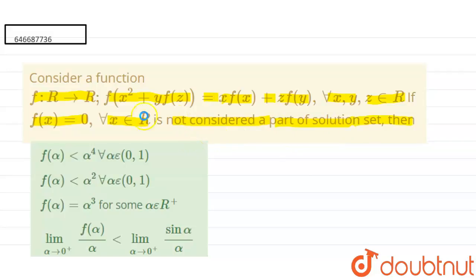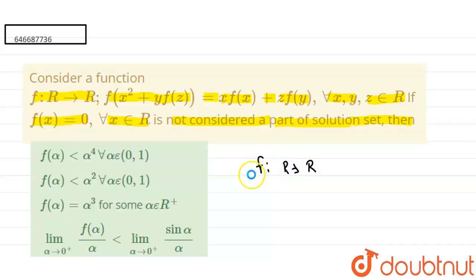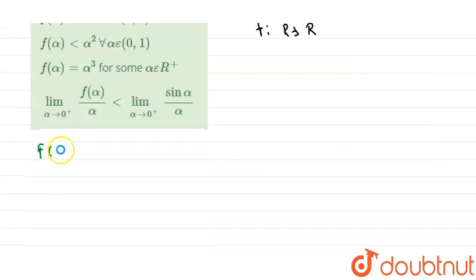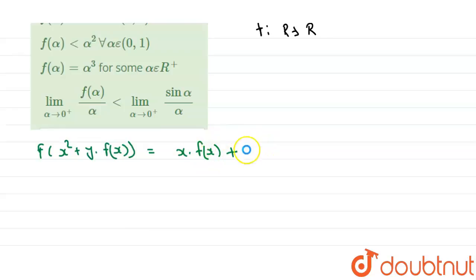In this question, it is written that f belongs to R to R, meaning the domain and co-domain of this function is R. The relation is given as f(x² + y·f(x)) = x·f(x) + z·f(y). This satisfies the linear relation type. Now we will check the options.